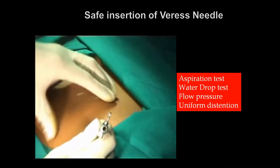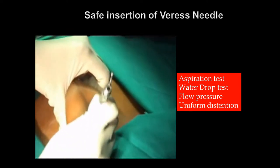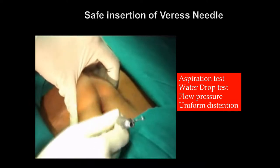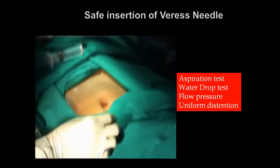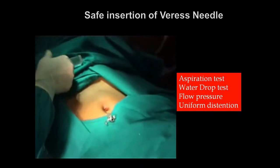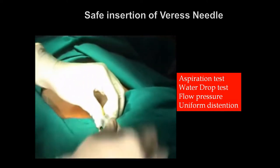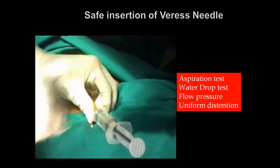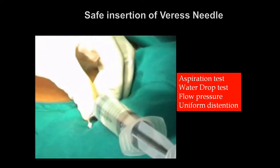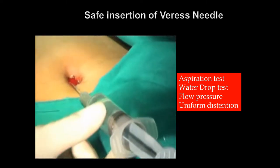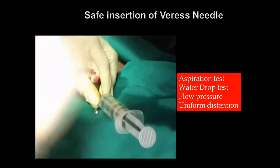Let us see the important safety steps in insertion of the Veress needle. We should lift the lower abdomen and make an incision around the umbilicus, then pass the Veress needle with an entry angle of around 60 degrees. Once it is inside, we should attach a syringe with water and aspirate to confirm there is no blood, bile, or urine. We then inject 5 to 10 ml of water inside and try to aspirate again.